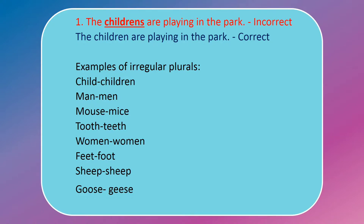The children are playing in the park. The mistake here is with 'children.' The correct answer is: the children are playing in the park. We say 'child' if there is only one and 'children' if there are more than one child. This type of plural is called an irregular plural because you just can't add S to the singular form. The other common irregular plurals are given here — you should memorize these to avoid mistakes.